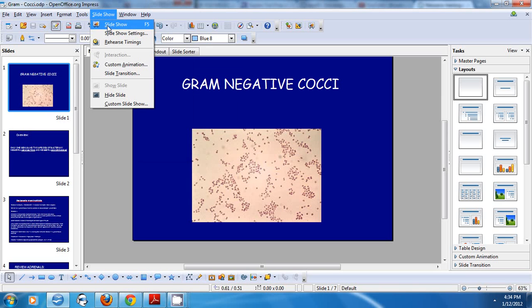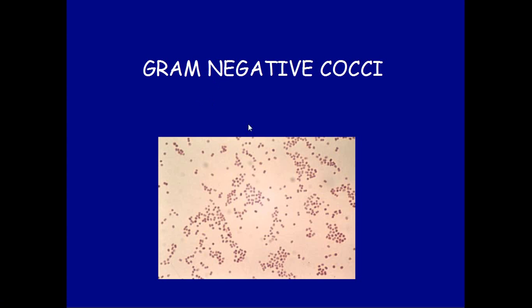I'm going to go over the gram-negative cocci — first, how they look. They're gram-negative, and negative is red on a microscope. Right here you see these red dots; this is gram-negative. The cocci means round, so you have round red dots: gram-negative cocci.